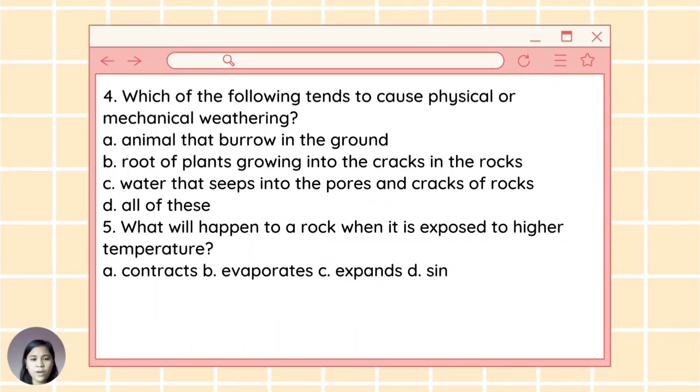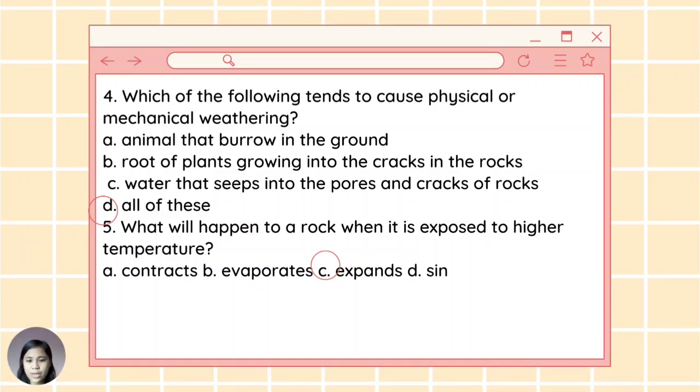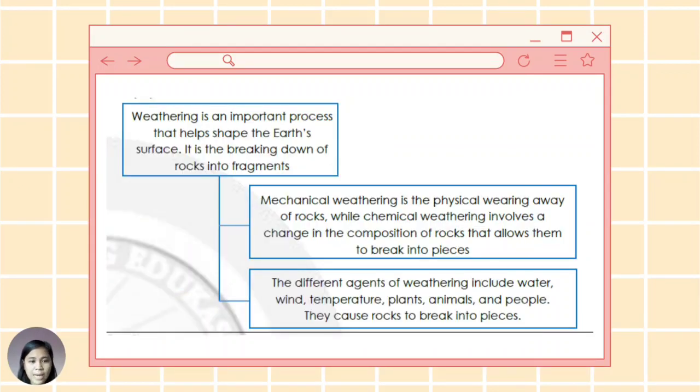For number four: Which of the following tends to cause physical or mechanical weathering? Letter A: Animals that burrow in the ground. Letter B: Roots of plants grow into the cracks in the rocks. Letter C: Water that seeps into the pores and cracks of rocks. Or letter D: All of these or all of the choices. For number five: What will happen to a rock when it is exposed to higher temperature? Letter A: Contracts. B: Evaporates. Letter C: Expands. Or letter D: Same. And these are the correct answers. For number four: Letter D. And number five: Letter C.